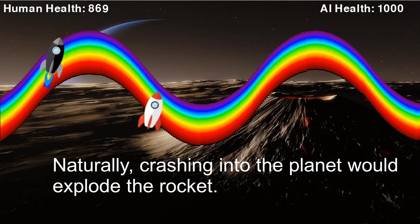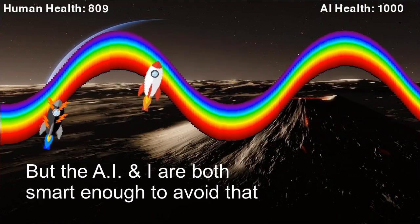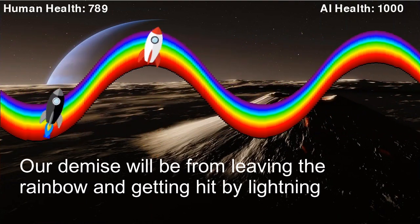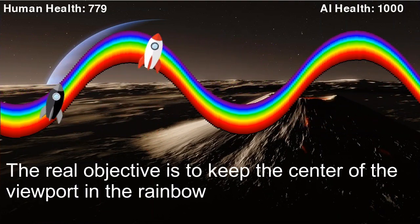The objective of this game is to keep your rocket in the rainbow. If you stray from the rainbow, you take damage. If you take too much damage, your rocket explodes. Since the rocket is kind of large compared to the rainbow, the location that is actually being measured is pretty much in the middle of the rocket's window.